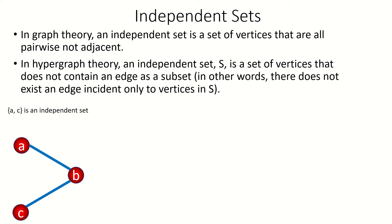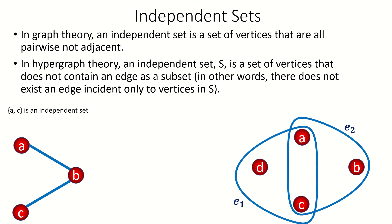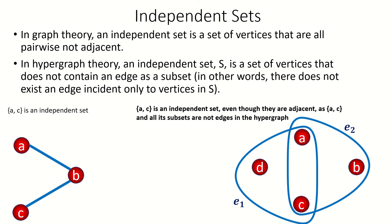However, when we allow for edges of size 3 or greater, as in hypergraphs, we allow for the possibility that two vertices in an independent set are adjacent to each other, which is an interesting difference between independent sets in graph and in hypergraph theory. As an example, AC in the hypergraph shown here is an independent set even though A and C are adjacent. ABC would not be an independent set because edge E2 would be entirely contained within our set.